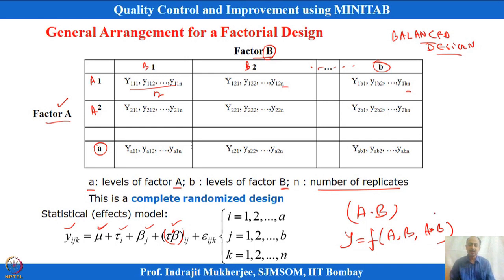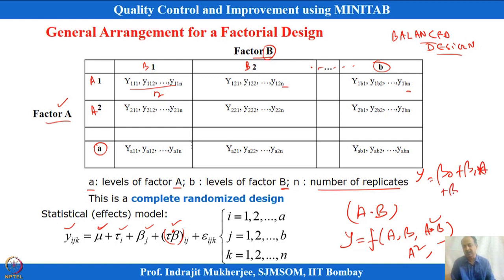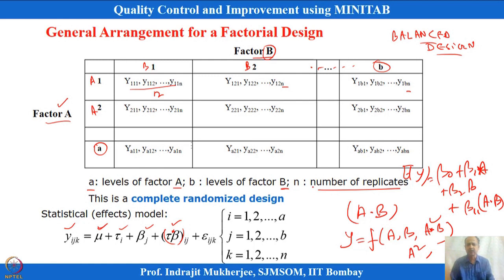To understand interaction: when we write a polynomial regression model, Y can be a function of A, a function of B, and also a function of A×B. If A×B is significant, it means the effect of one factor on Y depends on the level of the other. We need to check whether the interaction is significant before selecting the best combination.